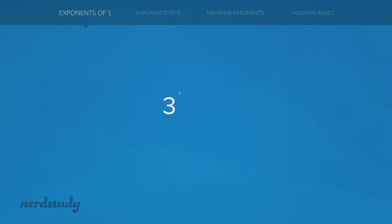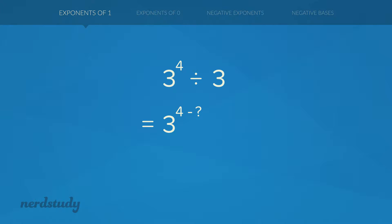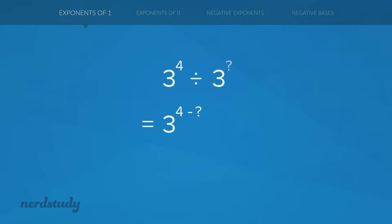So what if we had 3 to the exponent 4 divided by 3? Well, in this case we do see the division of two powers. The bases are the same, so we're tempted to use the quotient rule — and it's actually correct to use the quotient rule. The only problem is that the exponent for the denominator appears to be missing. But we just learned that 3 to the exponent 1 equals 3, so what we have is 3 to the exponent 4 divided by 3 to the exponent 1, which equals 3 to the exponent 4 minus 1.